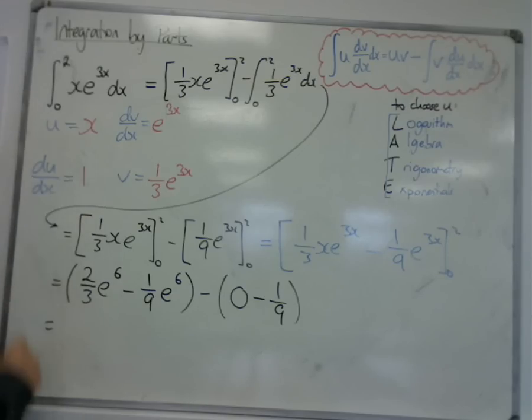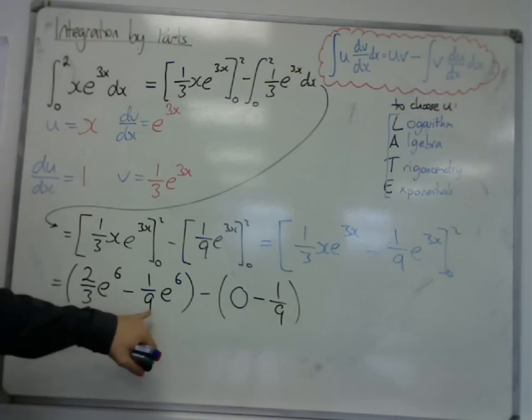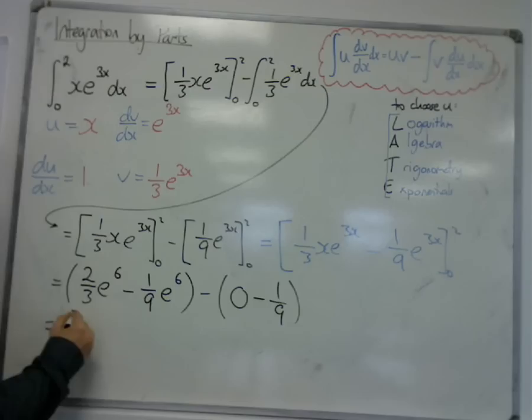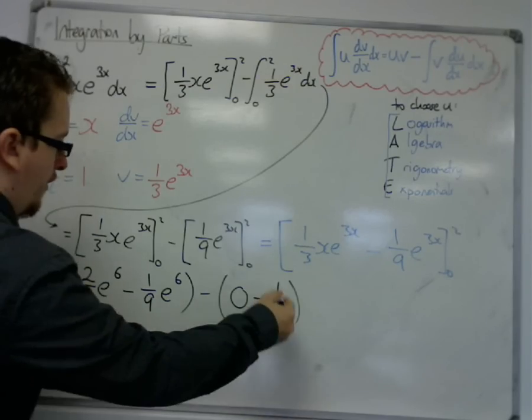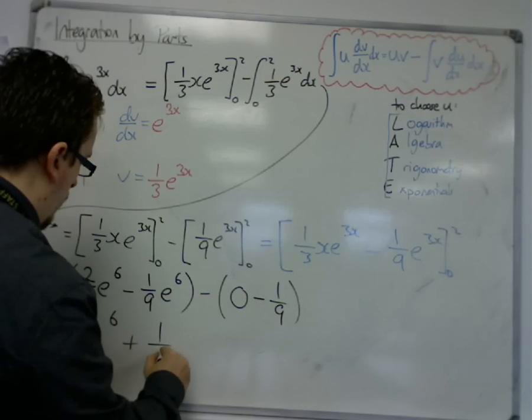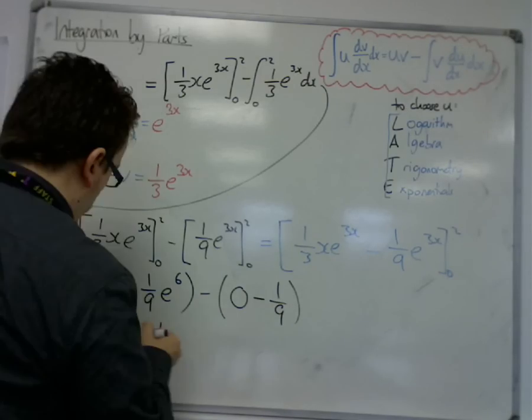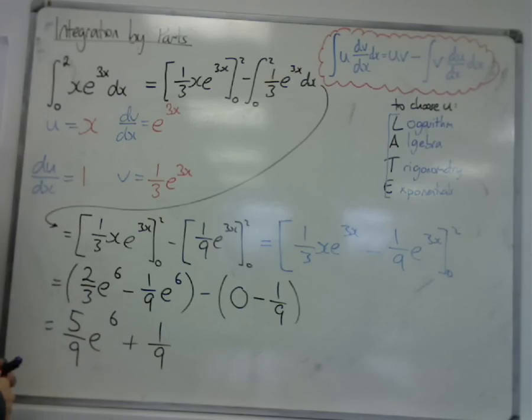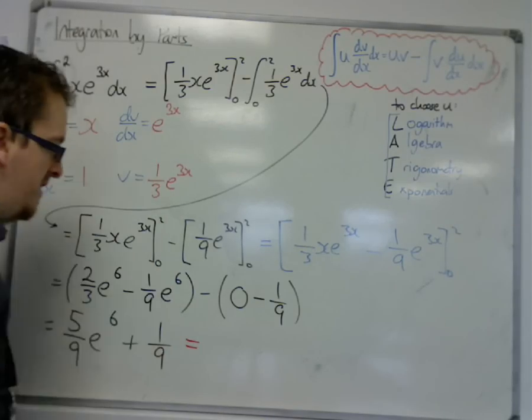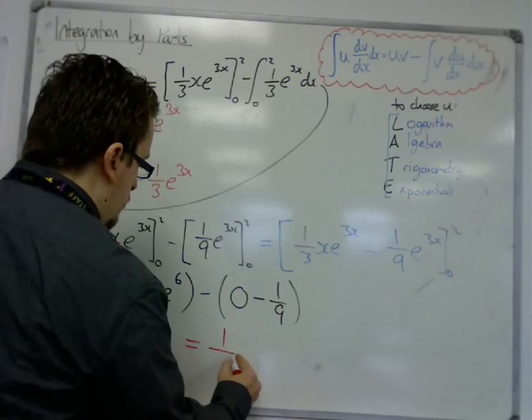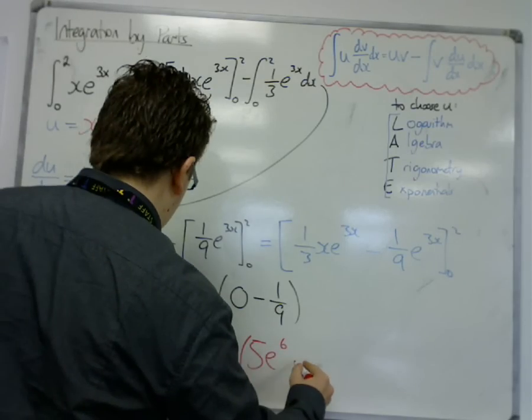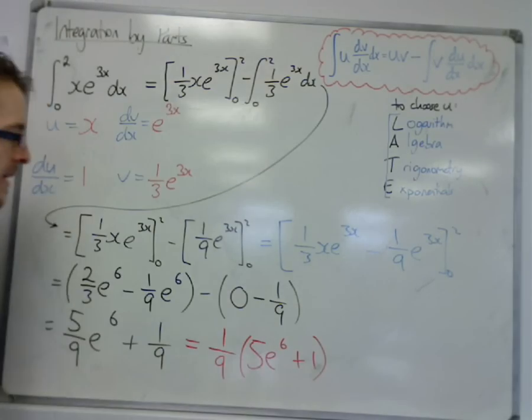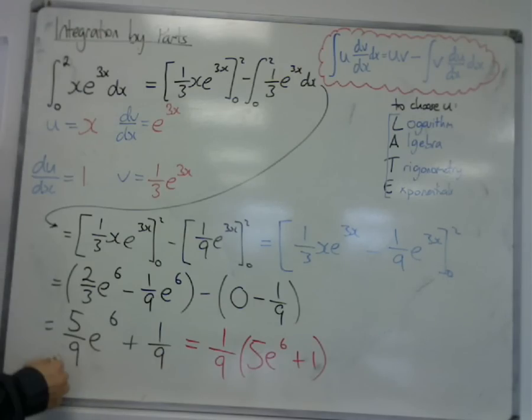So, what do we have here? We've got 2 thirds, take away 1 ninth. Well, that's 6 ninths, take away 1 ninth. That's 5 ninths e to the 6. And we've got a take away, a minus, so that's plus 1 ninth. Okay, you could write that then, at this point, if the question was asking you to write it in a specific format, as 1 ninth, 5 e to the 6, plus 1. Okay, and this is in its exact form.